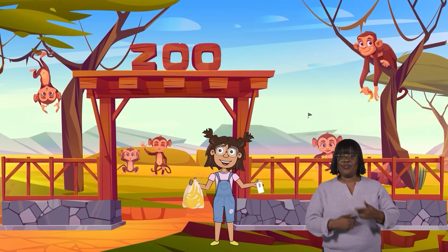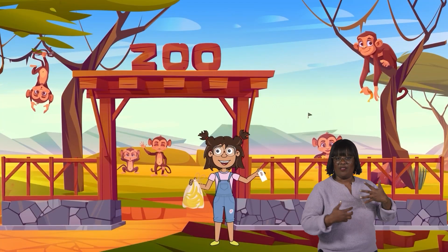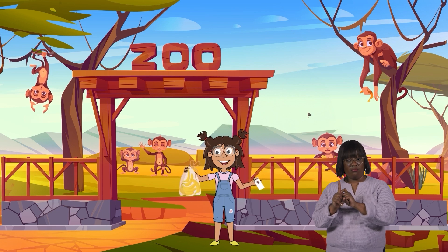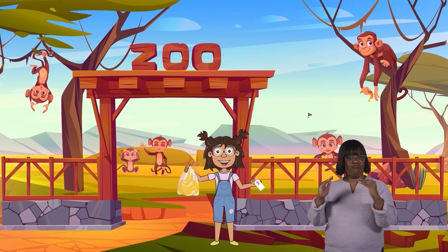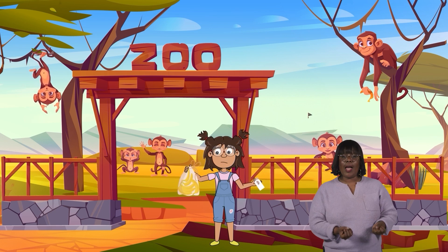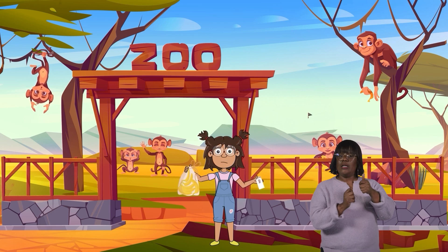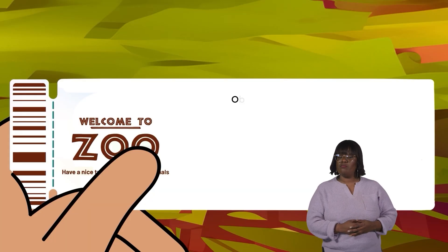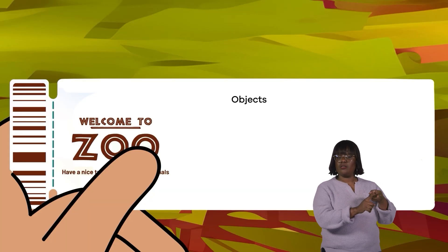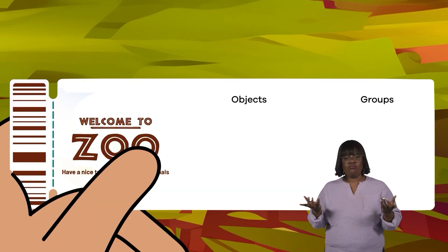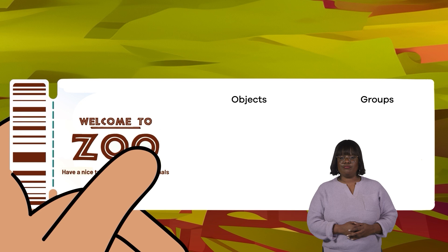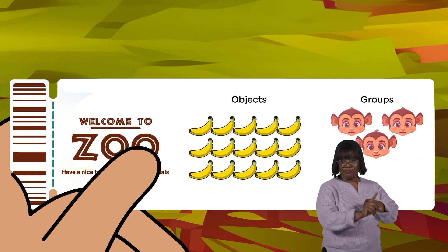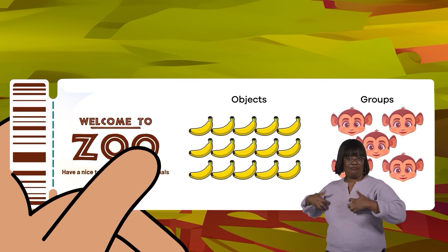There are five monkeys at the zoo, and a bag of 15 bananas for the monkeys to share equally. How many bananas does each monkey get? What are the objects, and what are the groups? The bananas are the objects, and the monkeys are the groups.